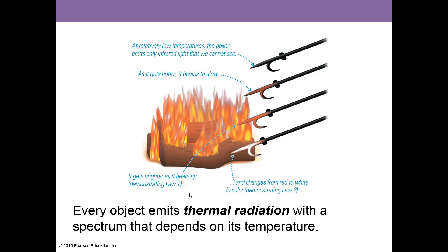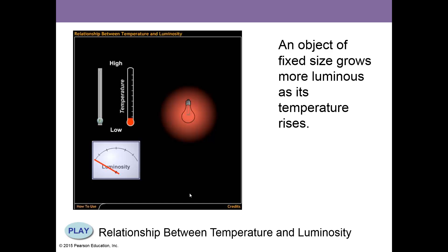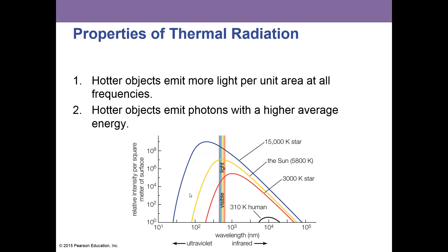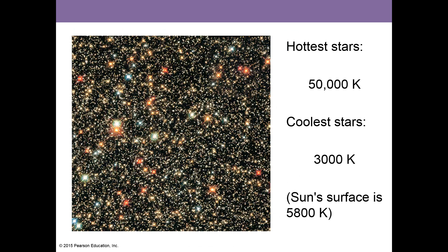Every object emits thermal radiation with a spectrum that depends on its temperature. An object of fixed size grows more luminous as its temperature increases—so as it gets hotter and hotter it becomes brighter and brighter. Hotter objects emit more light per unit area at all frequencies, and hotter objects emit photons with a higher average energy. The hottest stars are 50,000 Kelvin, the coolest stars are 3,000 Kelvin. To compare that with the Sun, the Sun's surface is 5,800 Kelvin.